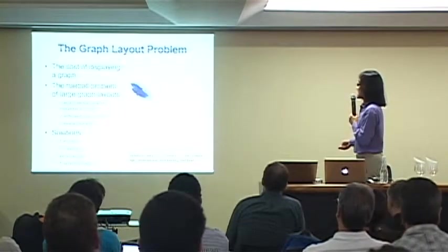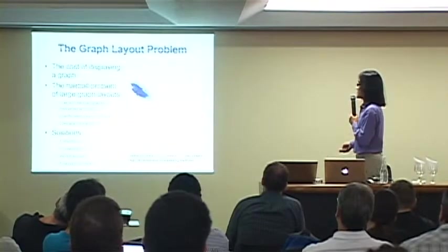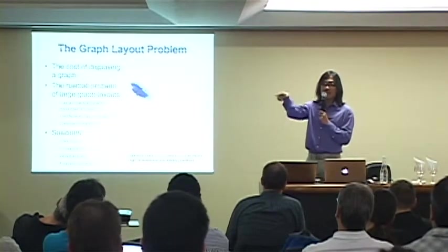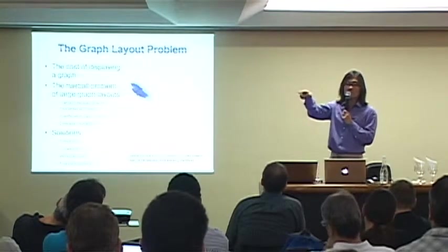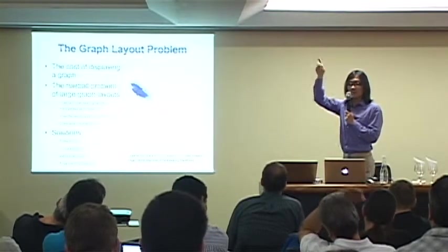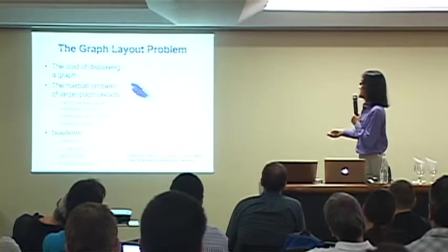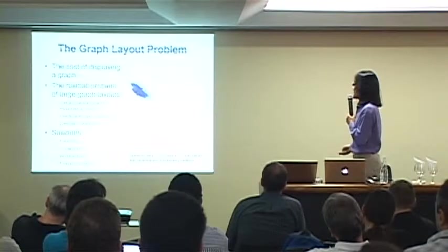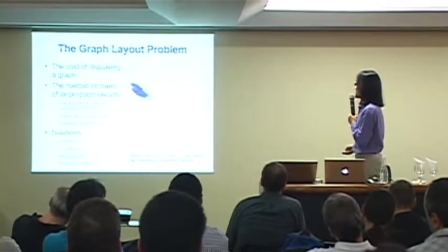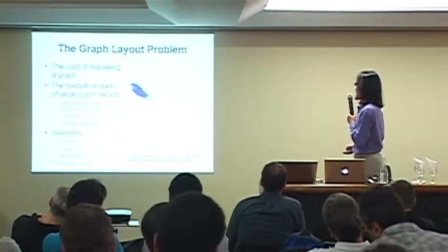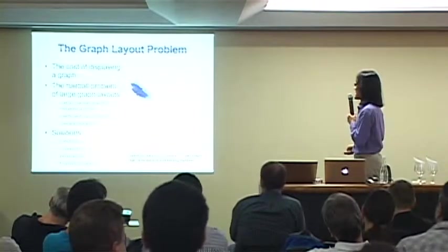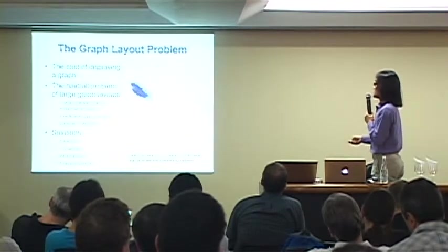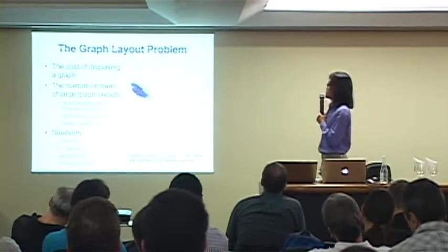So this is a data set that we created. We call it California data set. Basically, we do a web search and then you type in the word California and you get all these web pages, and then you form a network based on the links between all these pages. And it's not big. It's only just over 6,000 nodes. But then it has over 15,000 edges. But when you use high dimensional embedding method, this is what you get. Not very helpful at all.